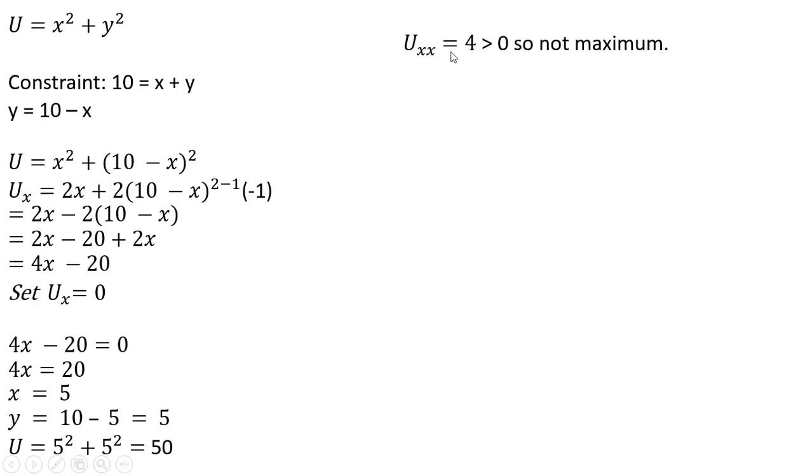One thing we'll notice here is that this outcome is not a maximum. The second derivative, if we were to take the derivative of 4x minus 20, we'd just get 4. And that is not less than 0, so we're not at a maximum. Condition for a maximum is that the second order condition would be negative.